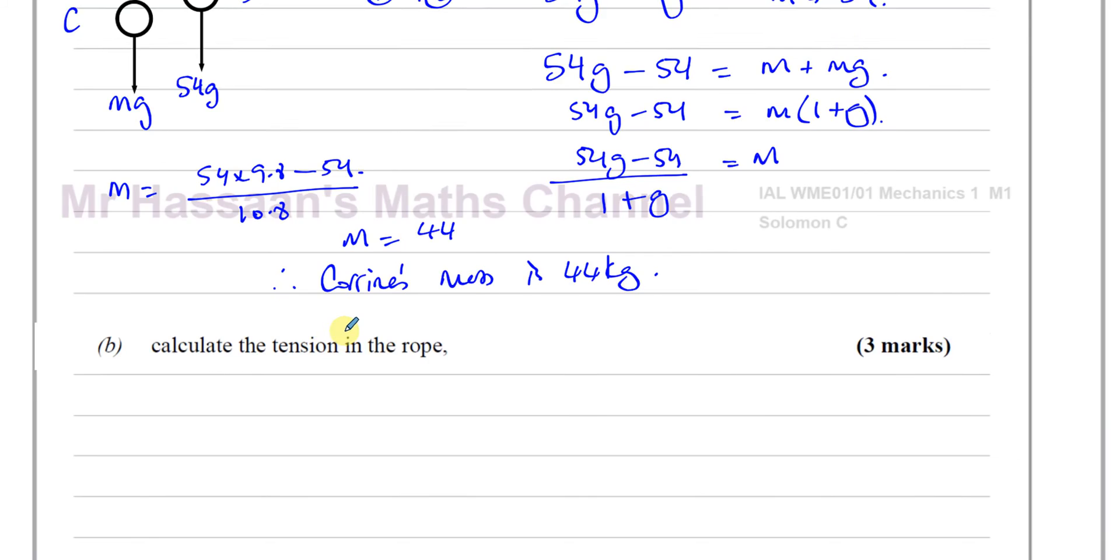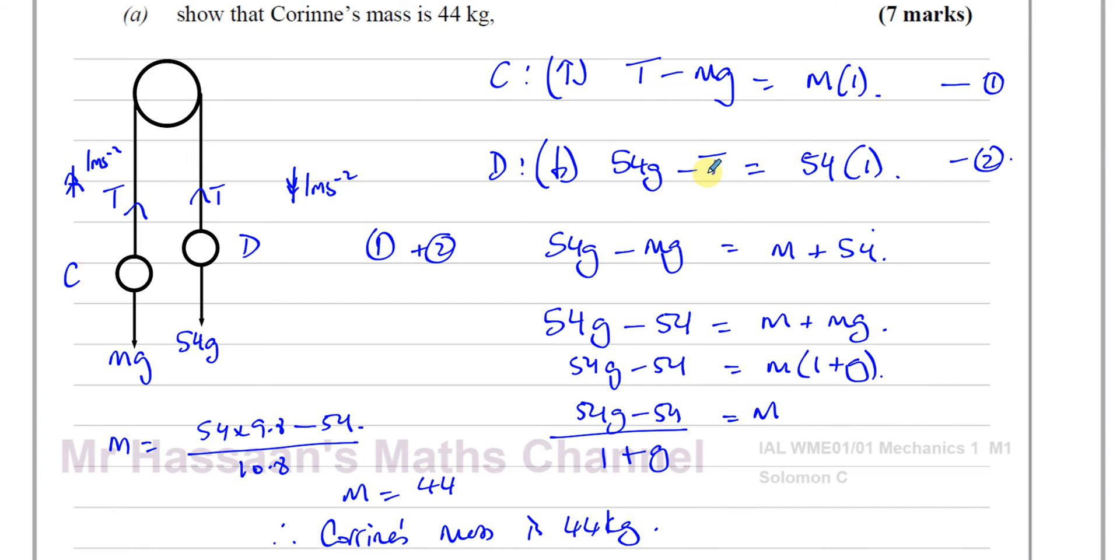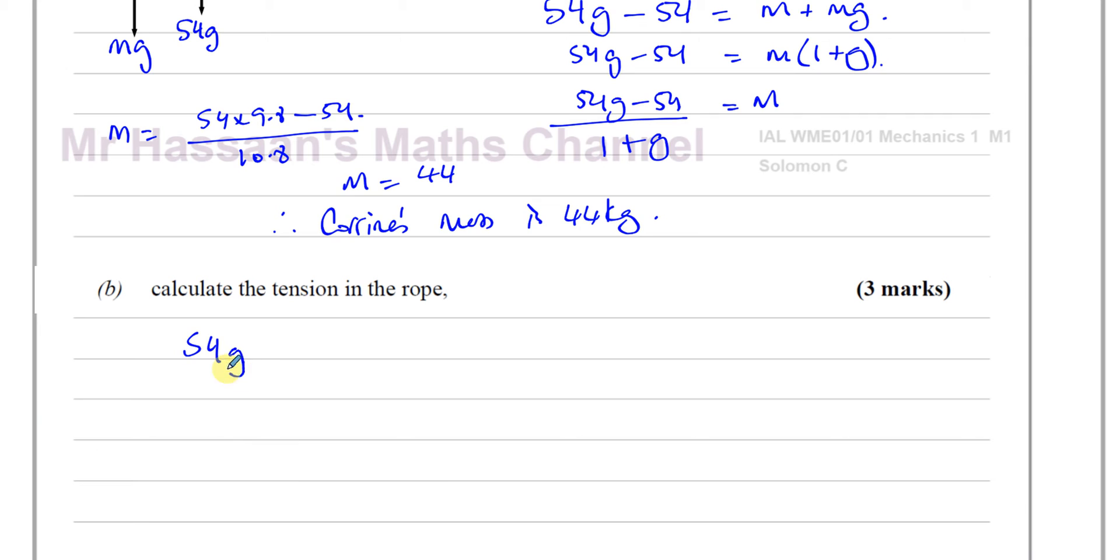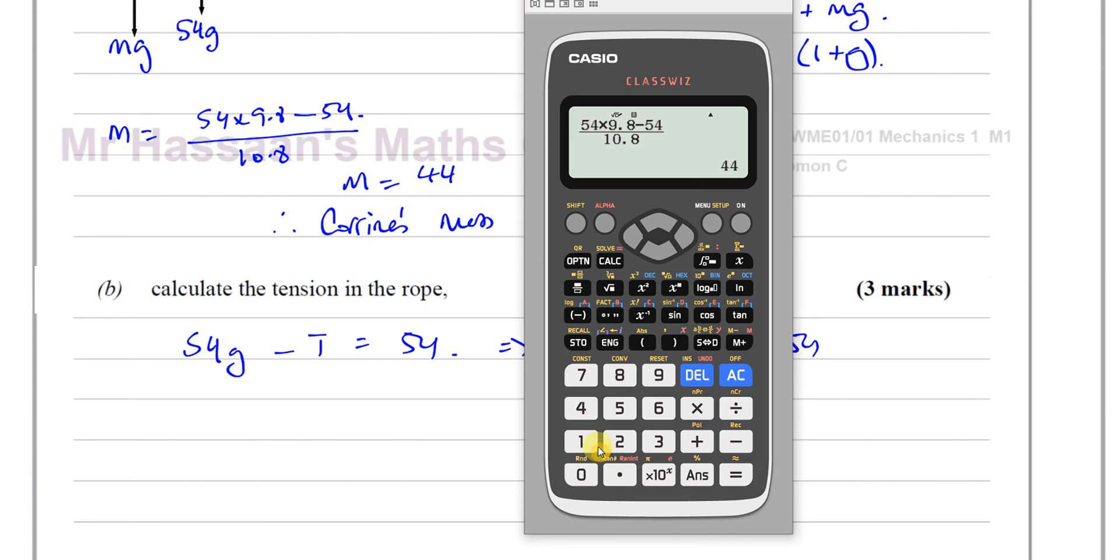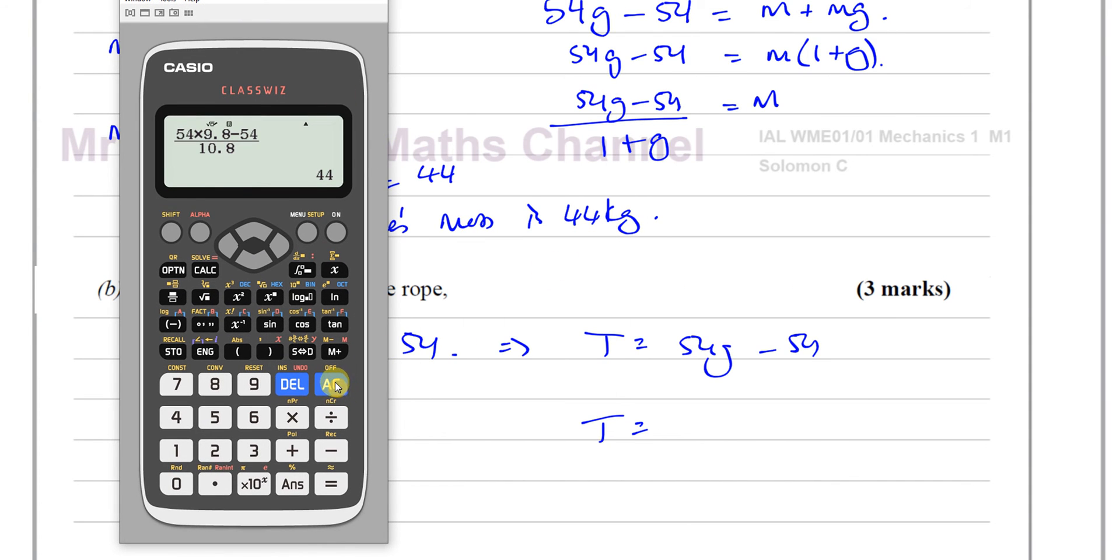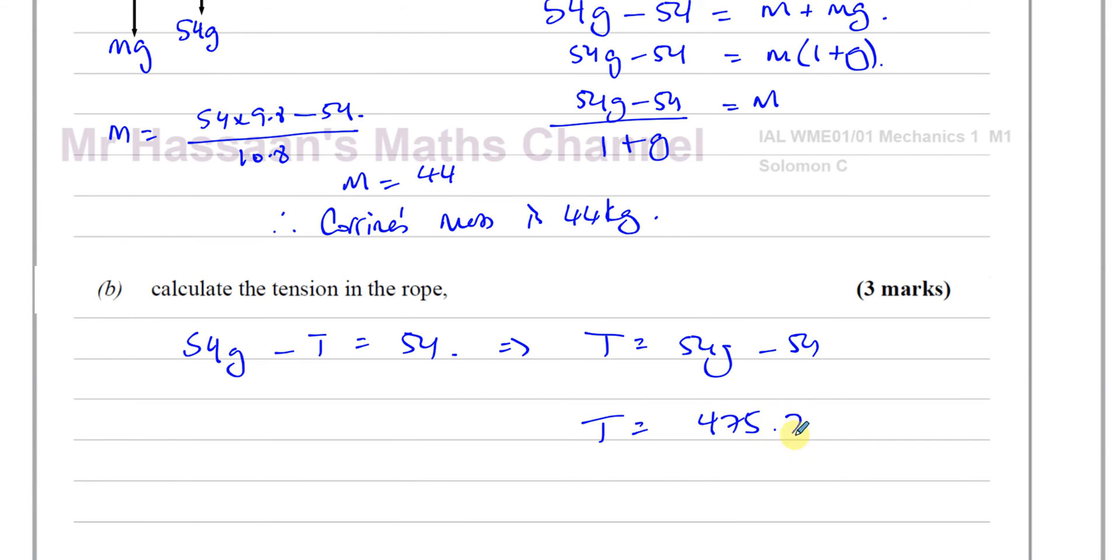Now we can use one of these two equations to find the tension. For example, if you take equation 2, we have 54G minus T equals 54. So we can find what T is from this. We could say T is equal to 54G minus 54. That would be the tension in the rope. We can find it straight away. 54 times 9.8 minus 54 gives us 475.2 Newtons, which you can write as 475 Newtons or 480 Newtons. Both of these will be acceptable in terms of your answer, 3 significant figures or 2 significant figures if you're using G.